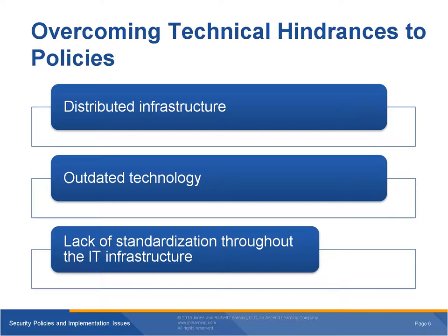Overcoming technical hindrances to policies — first is distributed infrastructure. Security policies apply throughout the enterprise, requiring a centralized view and control of risks. We design a central set of policies and apply them across the enterprise. However, today's technology is highly decentralized: smart devices are mobile, users' laptops and desktops have tremendous computing power, and remote offices have servers and complex data closets supporting local networks. All of this adds up to distributed infrastructure — a term for an organization's collection of computers, including laptops, tablets, and smartphones, networked together and equipped with distributed system software so that they work together even from various locations.